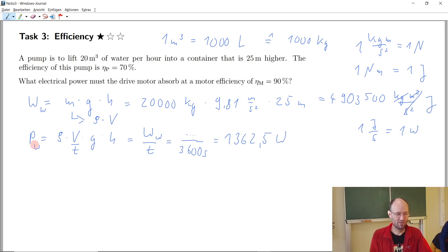So how to continue? That's the power that's needed to get the water up and now we need to divide by the efficiency of the pump and afterwards also divide by the efficiency of the motor. Exactly. So to get the power that goes into the pump, the power of water divided by the efficiency of the pump.